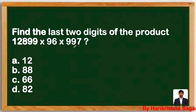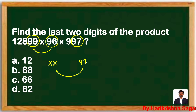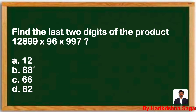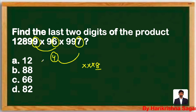Find the last two digits of 1289×96×997. You can find the last two digits by working with 99, 96, and 97 step by step. Alternatively, observe the options — they end with 2, 8, 6, 2. Checking the unit digit: 9×6 = 54, then 4×7 = 28, so the unit digit of the entire result is 8. Only option B (88) ends with 8, so the answer is 88.